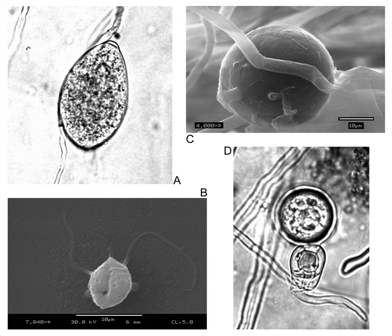Oomycota, or oomycetes, form a distinct phylogenetic lineage of fungus-like eukaryotic microorganisms. They are filamentous, microscopic, absorptive organisms that reproduce both sexually and asexually. Oomycetes occupy both saprophytic and pathogenic lifestyles, and include some of the most notorious pathogens of plants, causing devastating diseases such as late blight of potato and sudden oak death.